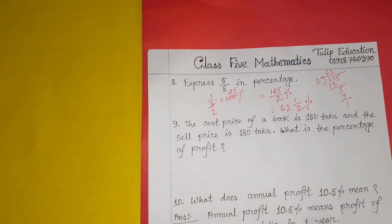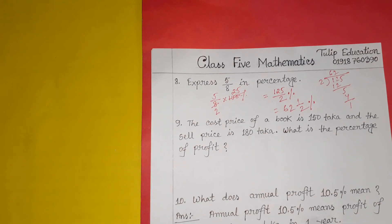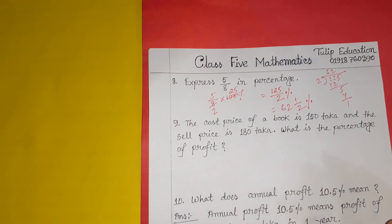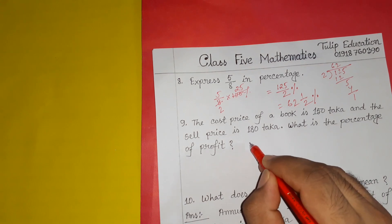Question number 9: the cost price of a book is 150 and the sell price is 180. What is the percentage of profit? The profit percentage formula is: profit divided by cost price, multiplied by 100%.